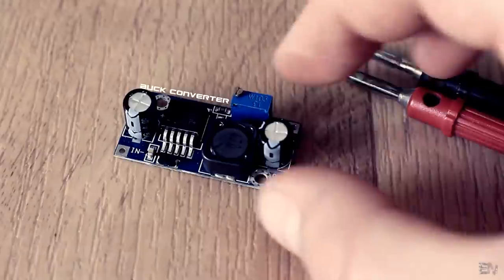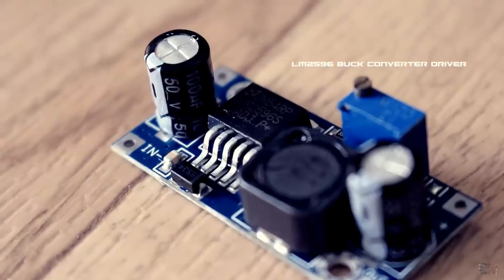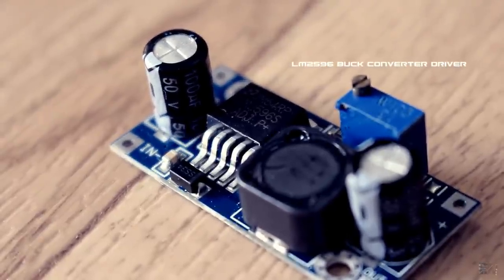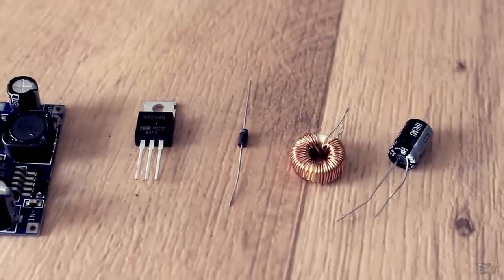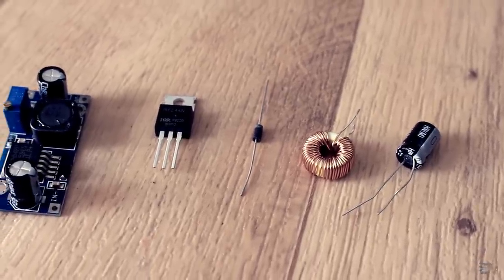Let's start with the buck converter. This is a circuit that will lower the voltage. To better understand I will use real values instead of only tags like VIN and VOUT.